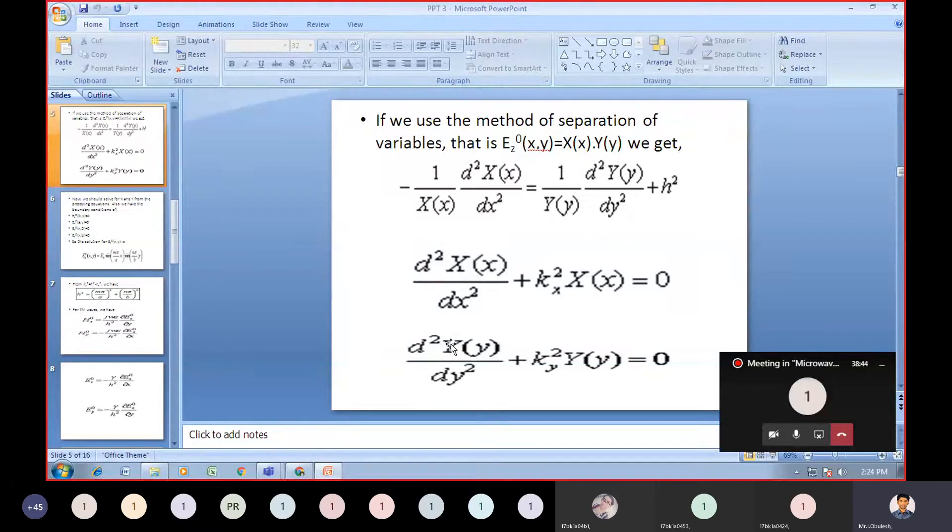From that, we need to differentiate: d²X(x)/dx² plus K_x² times X(x) equals zero. Similarly for Y, we have d²Y(y)/dy² plus K_y² times Y(y) equals zero.